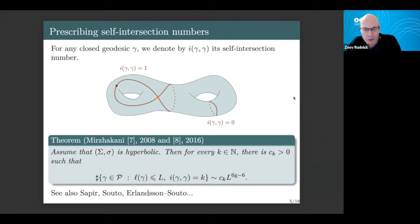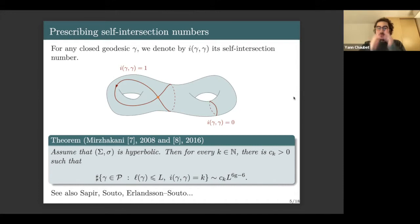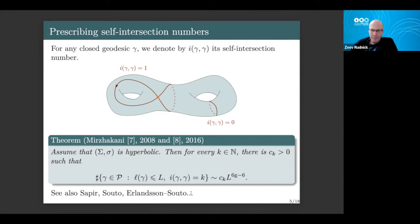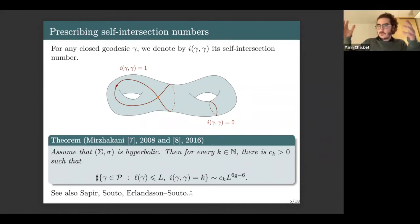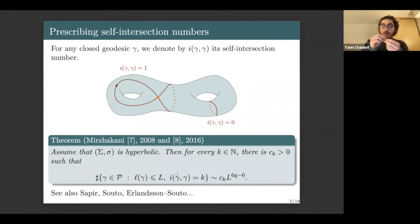There is a question about whether Mirzakhani's results hold for variable negative curvature. I don't think so. There is a result of Erlansson and Souto which says that if you consider a hyperbolic metric on your surface and look at simple geodesics, measuring their lengths with respect to another metric of variable negative curvature, then the result holds. But I don't know if it holds when the geodesics are geodesics for the variable negative curvature metric itself — I would say it's not known.